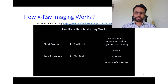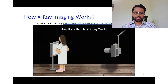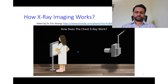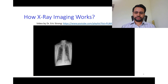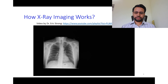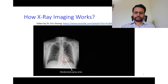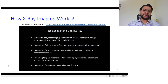Returning to our patient in the radiology department: we fire X-rays at her, some pass through, some get absorbed, and a few get scattered. The result is an image formed on the photographic film of the shadows cast by the various chest structures. The dark areas correspond to air-filled structures such as the lungs, while medium-gray areas correspond to fluid or soft tissue — in this case, the heart.